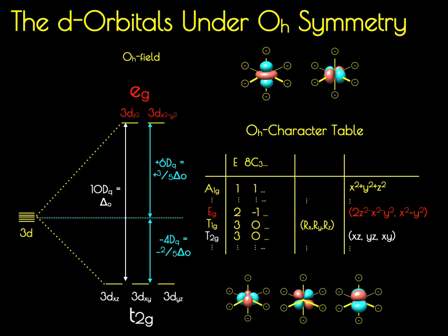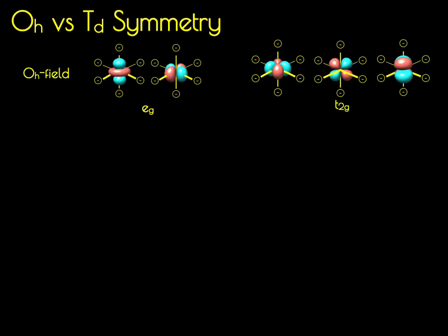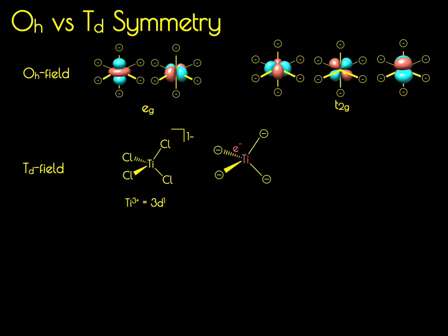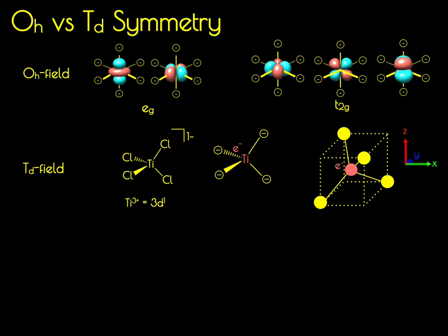We're now going to employ the same analysis to a molecule in tetrahedral symmetry. Instead of titanium hexachloride, we're going to talk about titanium(III) tetrachloride, which is still a 3d1 ion. Employing the assumptions made in crystal field theory, we change those chlorides into negative point charges. It's a little difficult to work with d orbitals when visualizing a tetrahedral molecule in this orientation, so we rotate it and think about it as being inscribed on a cube with the z axis coming through the top face, the x axis through the right face, and the y axis through the back face. We can then place d orbitals within that cube to understand how they're oriented towards those negative point charges.